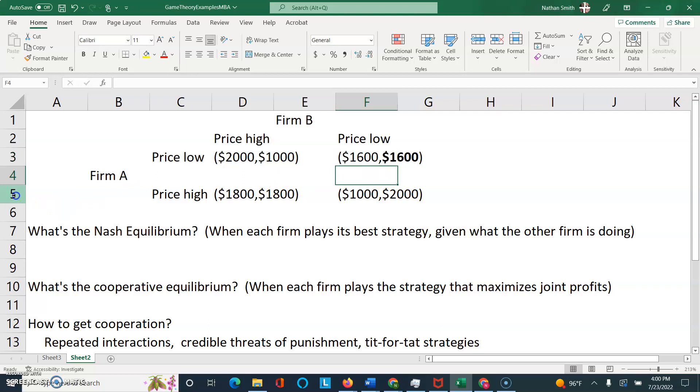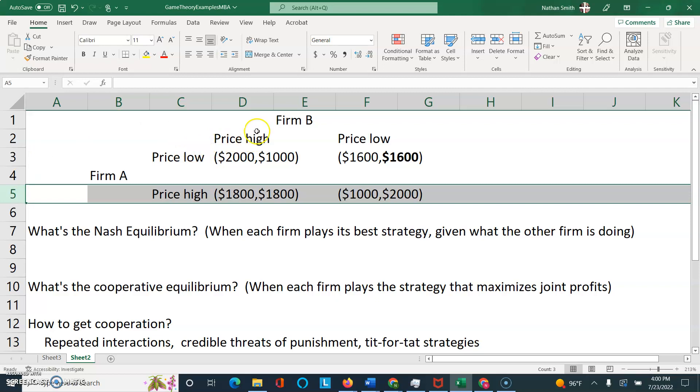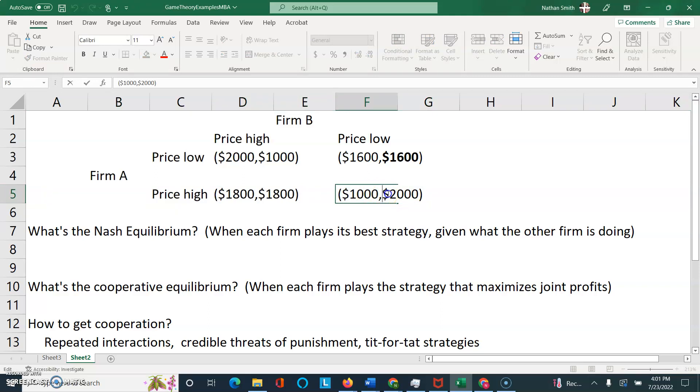So, now suppose Firm A prices high. Let's again highlight that row. Firm B can price high and get $1,800. Again, that's the rightmost number of the pair. Or Firm B can price low and get $2,000. $2,000 is better than $1,800. So, that means Firm B is going to price low if Firm A priced high. I'm going to use the bolding technique, which is a neat thing to do in Excel here, just to indicate that, again, if Firm A prices high, Firm B is better off pricing low.